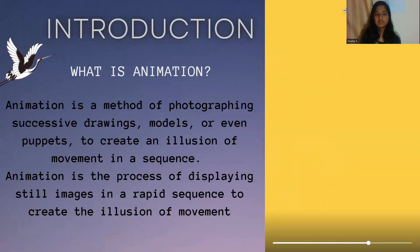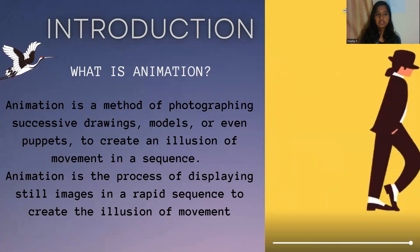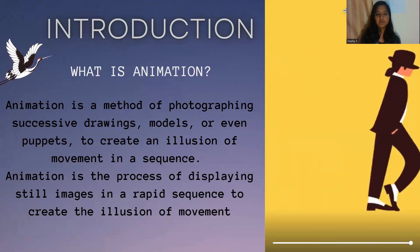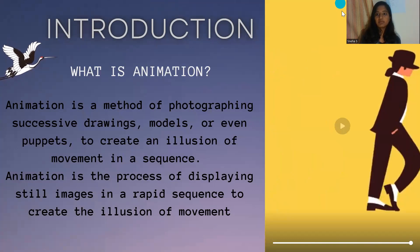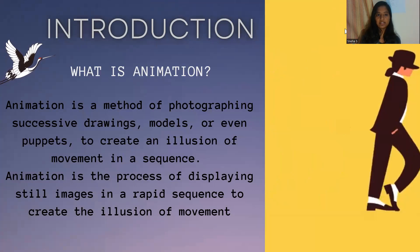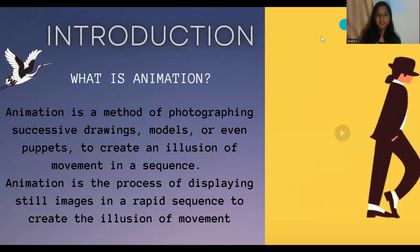What is animation? We all have heard about animation. Animation is a method of photographing successive drawings, models, or even puppets to create an illusion of movement in a sequence. It is also a process of displaying still images in a rapid sequence to create the illusion of movement. To show the emotional effect of any character, we use animation.